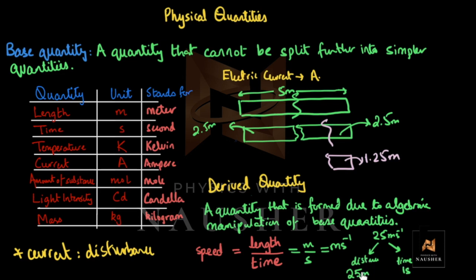As we progress further, you will understand that derived quantities are formed through base quantities, while the base quantity unit stays the same.